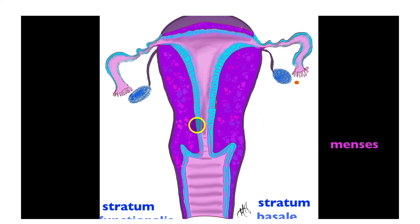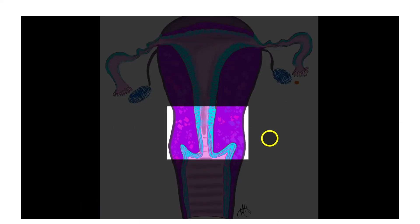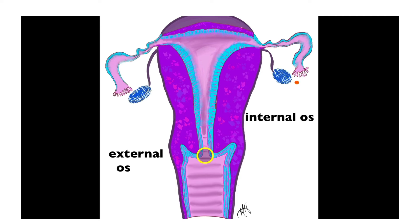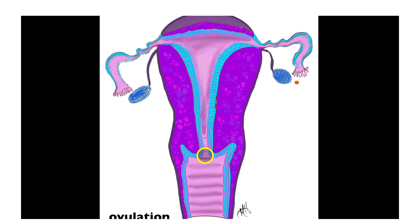Right here is the cervix. The cervix has a superior aspect known as the internal os and an inferior aspect known as the external os. There are glands that line the cervix that secrete mucus, and the goal of that mucus is to plug up the cervical canal to prevent movement of pathogens up the cervix into the uterus. Ovulation is the release of an egg from the ovary and occurs every 28 days. Ovulation and menses, or the menstrual cycle, are very related to each other but also very distinct processes.